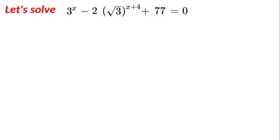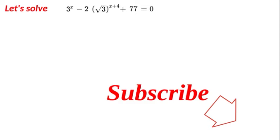Hello and a very warm welcome back to Maths Plus. Today we're solving the exponential equation: 3 to the power of x, minus 2 by the square root of 3, all to the power of x, minus 4, plus 77 is equal to 0. Maybe pause the video, give it a try, and let me know how you got on. If you're new to the channel, don't forget to subscribe — I really appreciate that. Let's get started.